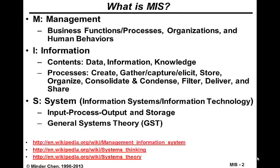The second part of information is the processing aspect — how we create and gather data, how we store the data that we have captured, how we organize it, how we consolidate and condense the data stored in our system, and eventually how we filter, sort, and deliver the information to the right person in order to help them do their job.